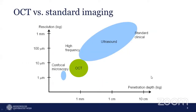Comparing OCT with other imaging technologies: compared to the confocal microscope, OCT has a higher penetration depth but lower resolution. Compared to ultrasound, OCT has lower penetration depth but higher resolution. So OCT lies between ultrasound and confocal microscopy in this tradeoff.